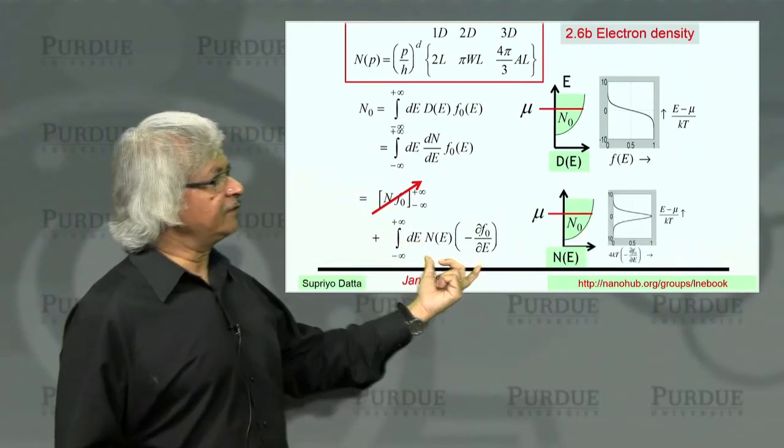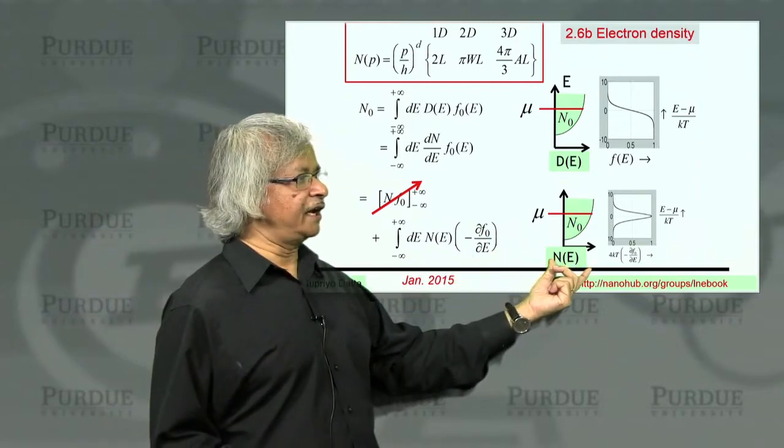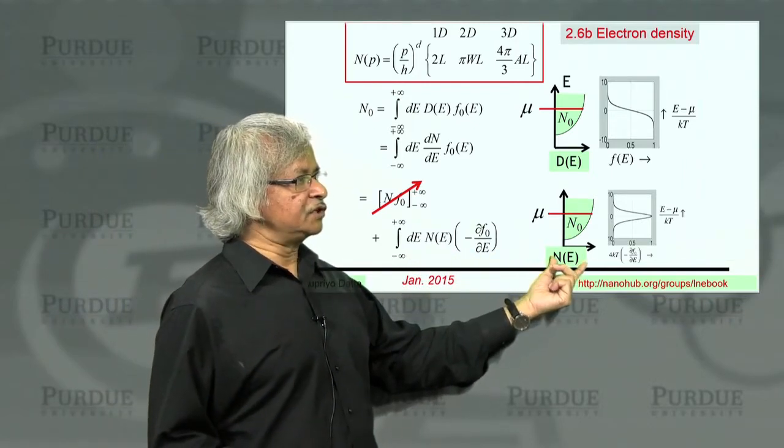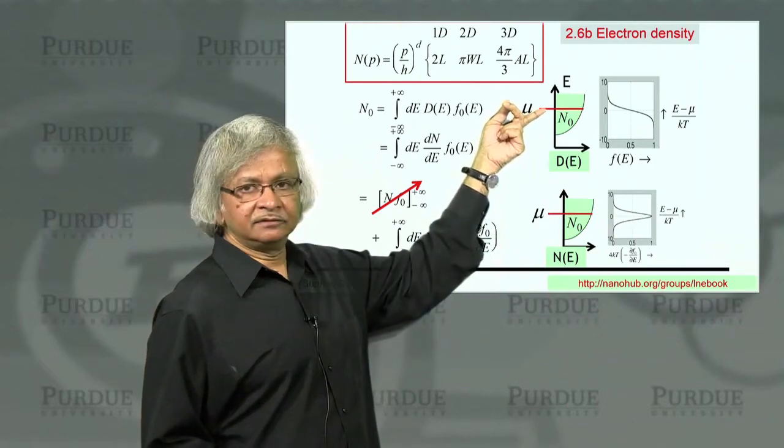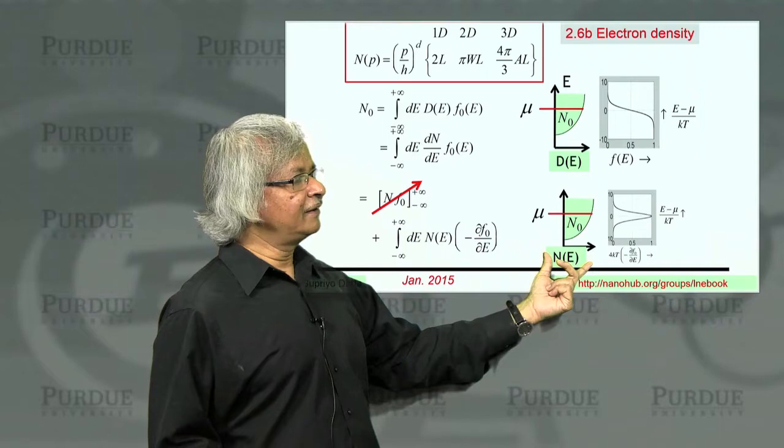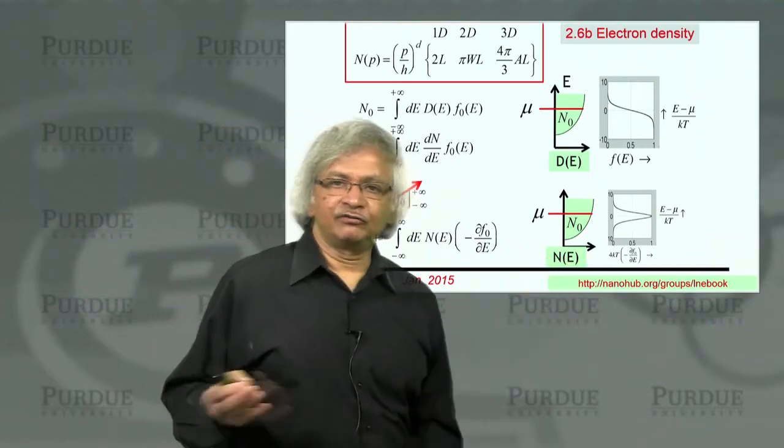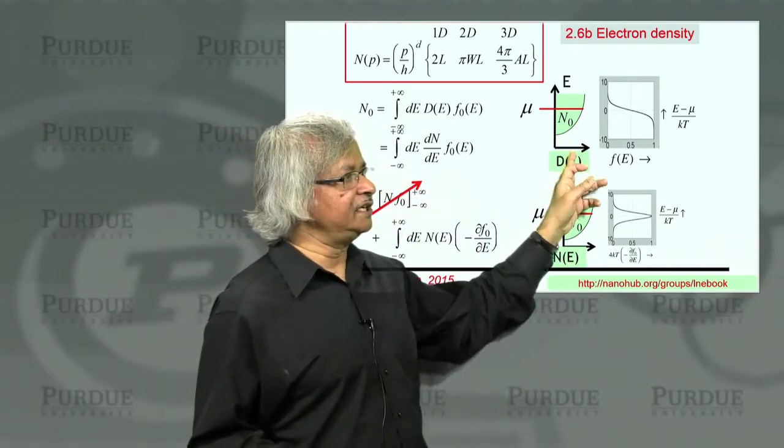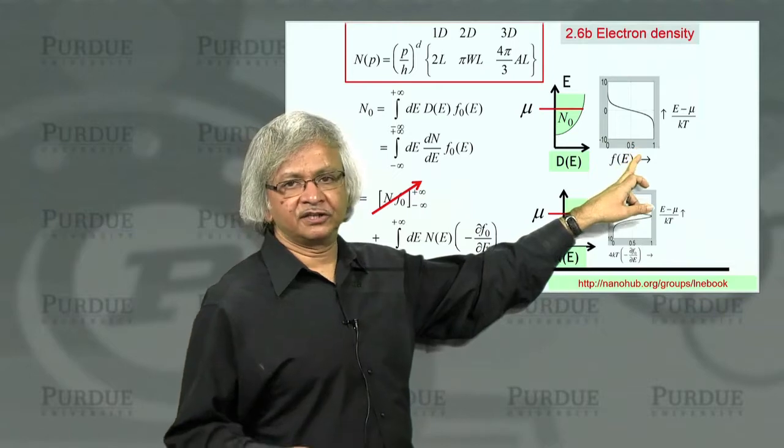And this you can visualize that you have a function N of E whose derivative is that function d of E. So this is the integrated version of that. And the thing is, how do you find the number of electrons? You can take D, multiply by Fermi function, integrate.